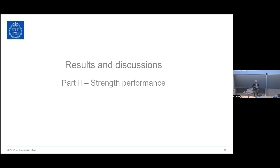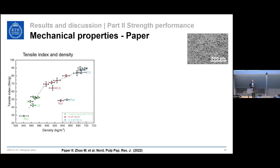Now we are at Results and Discussion, Part Two — strength performance. With the knowledge of adsorption, we made paper and measured tensile index and density. All strength chemicals were very efficient — they increased the tensile index dramatically without compromising density, with perhaps the exception of the CMC-treated birch fibers where there was some densification. Importantly, comparing kraft fibers and CMC-treated birch fibers, which are intrinsically the same fibers, we were able to achieve a higher tensile index with the CMC-treated ones because of their higher surface charge, which allows more dry strength chemicals to be added to the system.